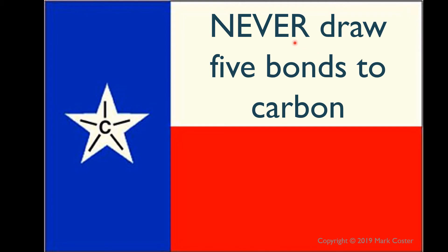Rule number four: never draw five bonds to carbon. In fact, never draw five bonds to any of the main group elements in the first row — that's boron, carbon, nitrogen, oxygen, and fluorine. None of those atoms obey the octet rule with five bonds. The octet rule says they want eight electrons in their valence shell, and each bond represents two electrons, so five bonds represents ten electrons — which is too many. A carbon with five bonds is colloquially known as a 'Texas carbon,' because it resembles the Texas star on the Texas flag.